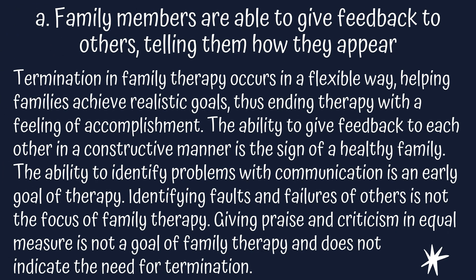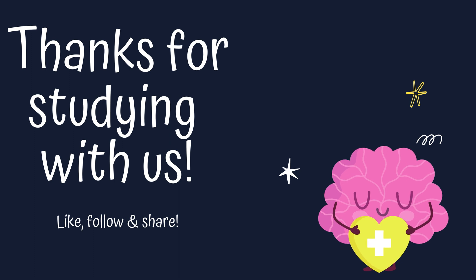The answer is A. Family members are able to give feedback to others, telling them how they appear. Termination in family therapy occurs in a flexible way, helping families achieve realistic goals, thus ending therapy with a feeling of accomplishment. The ability to give feedback to each other in a constructive manner is a sign of a healthy family. The ability to identify problems with communication is an early goal of therapy. Identifying faults and failures of others is not the focus of family therapy. Giving praise and criticism in equal measures is not a goal of family therapy either. All right, thanks for staying with us. Please like, follow, and share.